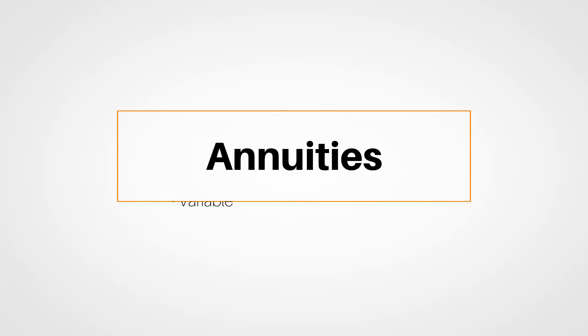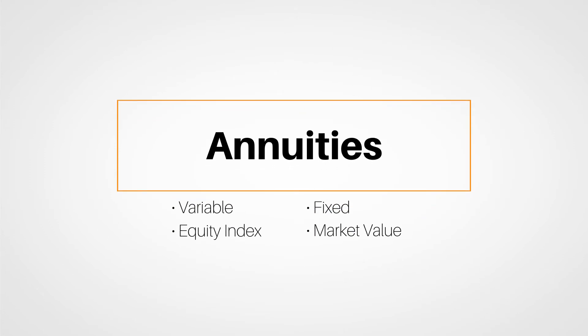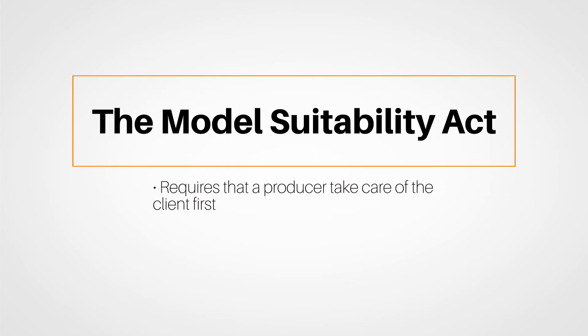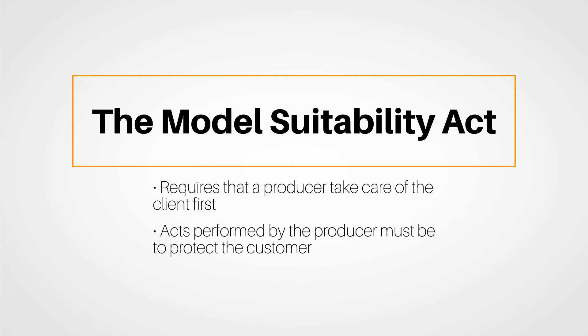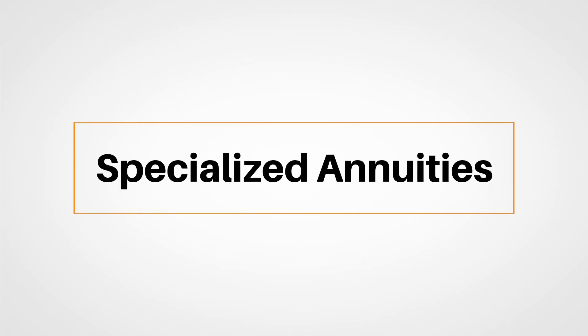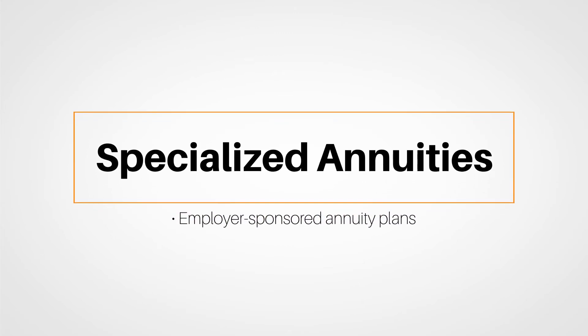We'll break down variable, fixed, equity index, and market value annuities. These are more complicated than standard fixed annuities, and you need to be well versed in these products — not only for the client's sake but for your own as well. The model suitability act requires that a producer take care of the client first, and all acts performed by the producer must be to protect the customer. Specialized annuities such as employer-sponsored annuity plans for employees are discussed as well, as these offer different tax advantages and are only available through an employer.